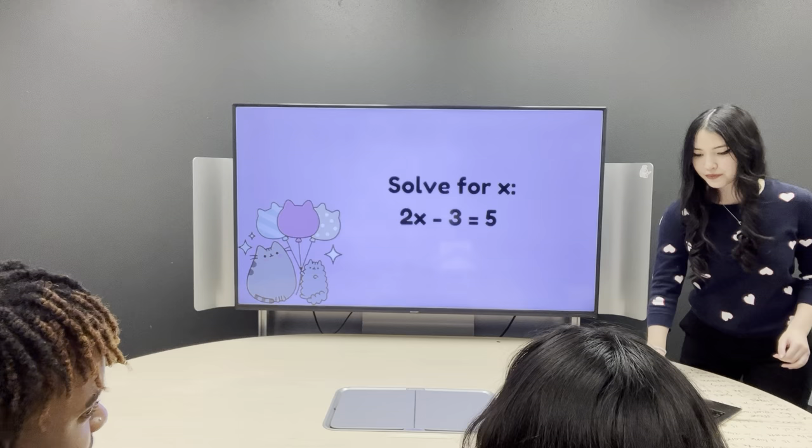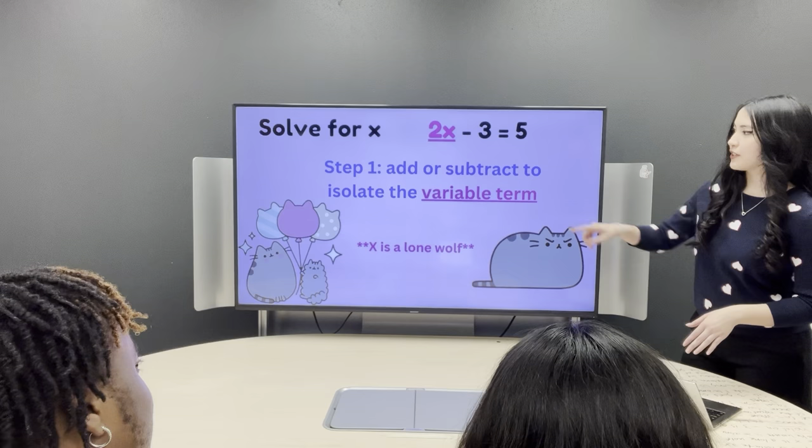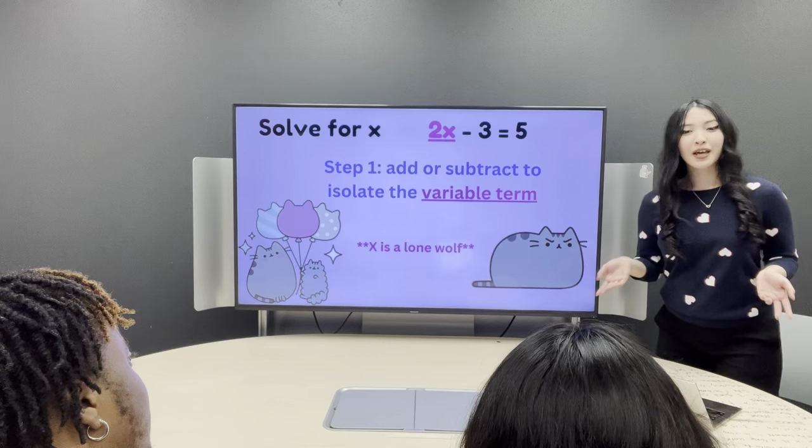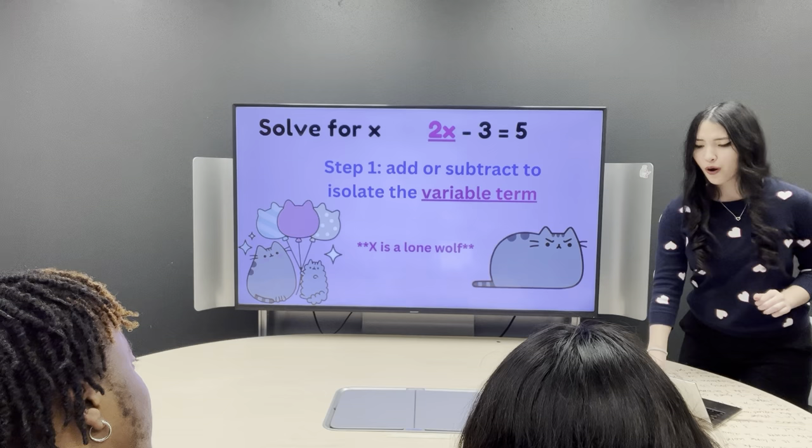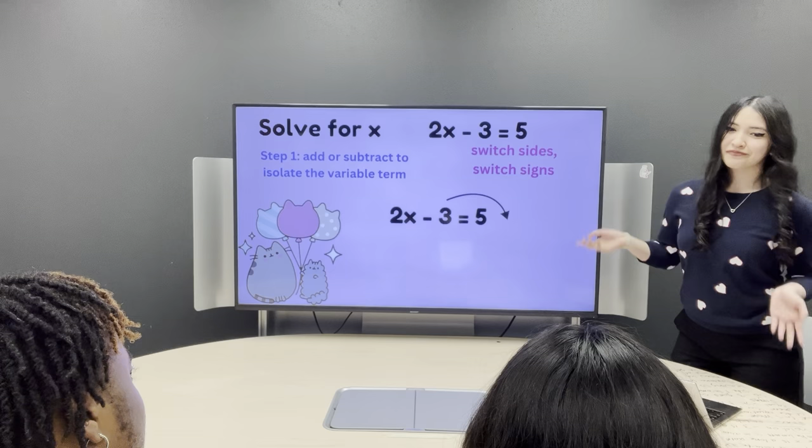So, in the first step, we're going to learn to add or subtract to isolate the variable term, which is 2x. But why do we isolate 2x? Because x is a lone wolf. This means that they want to be alone. But hold on. Negative 3 is all up in 2x's space. So, what do we do now?